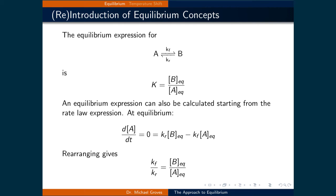Since we are talking about systems at equilibrium, we can also quantify this process using thermodynamic expressions. The equilibrium expression for A in equilibrium with B is expressed as capital K, the equilibrium constant, being equal to the concentration of B at equilibrium over the concentration of A at equilibrium.